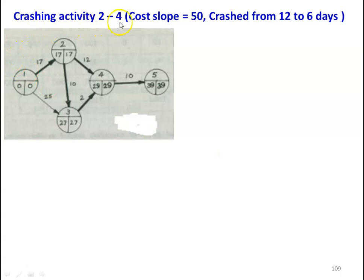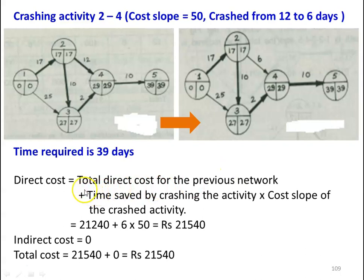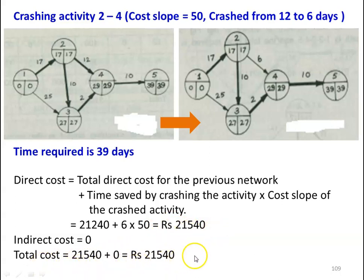Then, crashing activity 2-4 with cost slope 50, from 12 days to 6 days. There is no change in the project duration — it remains 39 days. Direct cost = 21,240 plus (6 days saved × 50) = 21,540. Total cost equals 21,540.